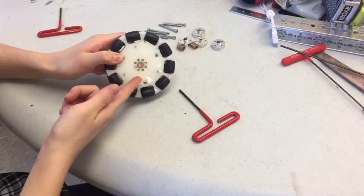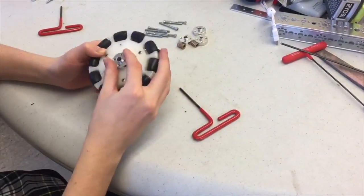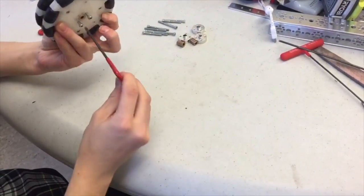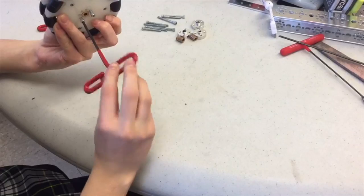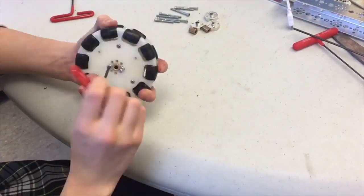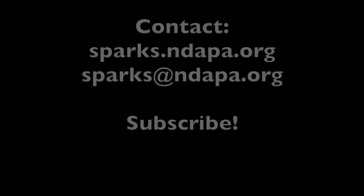Once these are screwed in enough that everything is connected, take an axle hub and line it up the same way you did with your silver spacer. Then continue to screw everything in. Once everything's nice and tight, you're done.